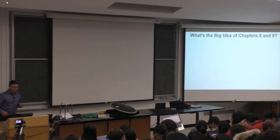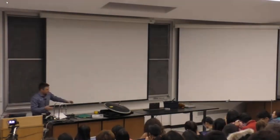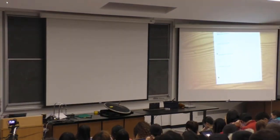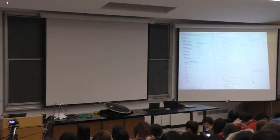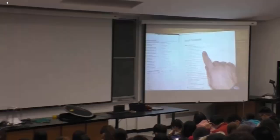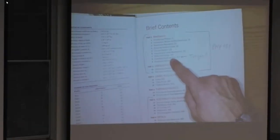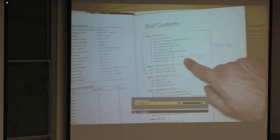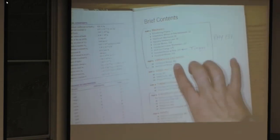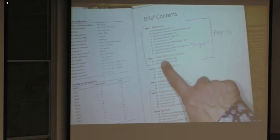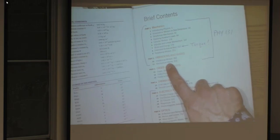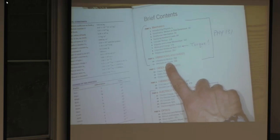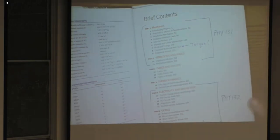Let's look at where we're going in the course. We've gone through the first seven chapters. The next two chapters are on extended bodies at rest and rotational motion — all the torque stuff. Then we have two more chapters before the final exam: vibrational motion and mechanical waves — things that oscillate back and forth, and how that translates into sound waves and electromagnetic waves like light.